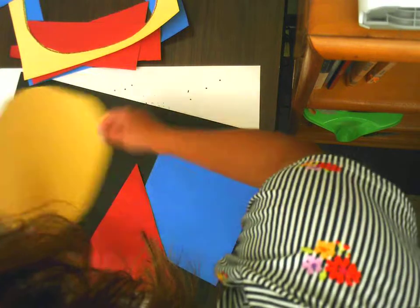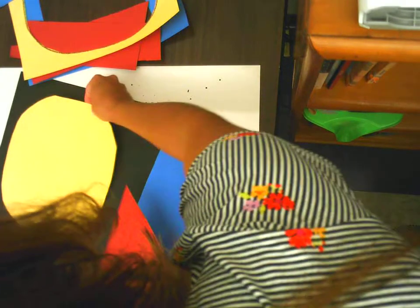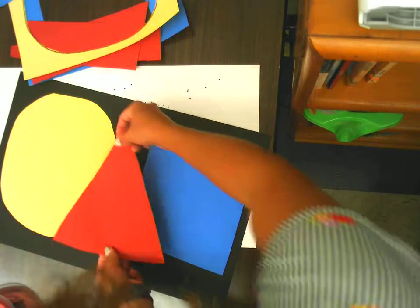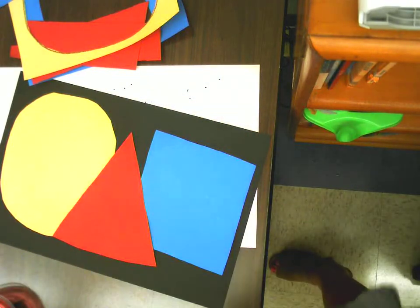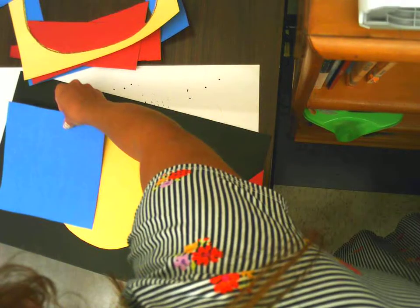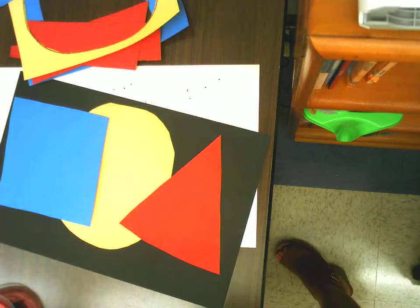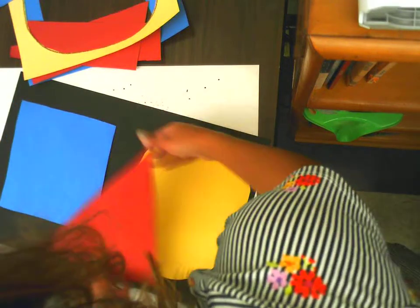We want to turn our shapes over so we don't see the crayon mark. Depending on how big your shapes are, you're going to have to do what's called overlapping, where some of your shape might cover some of the other shapes. Now it's up to you how you want to move your shapes around.